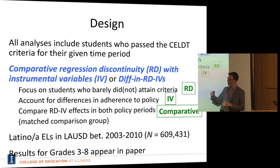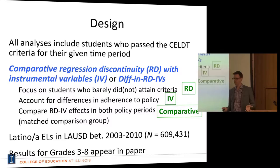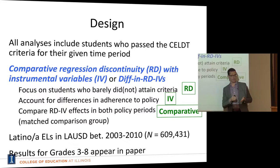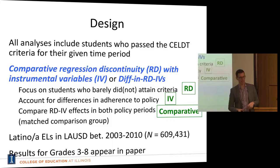We have our RDIV for each of the policy periods and take just a difference — that's the comparative component. We also have a matched comparison group of kids who were never English learners, and we're going to see what their effects were if they attained the criteria for reclassification, and subtract that off.